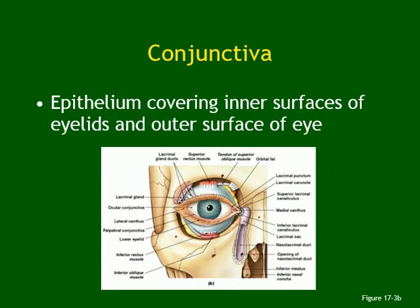Conjunctiva is the epithelium covering of the eye and the inner side of the eyelid. The other name for the eyelid is palpebra. Remember the rule: every time you see two or three names for the same structure, you have to know it, otherwise you will get the question wrong. So the eyelid is also called palpebra.